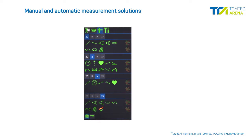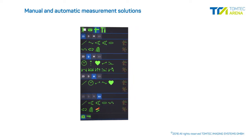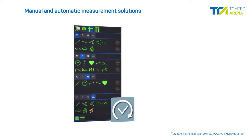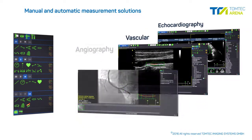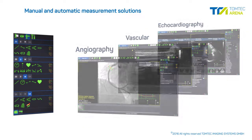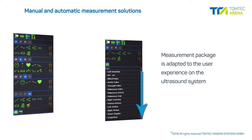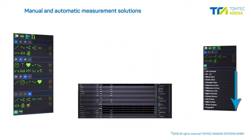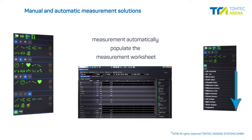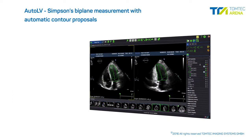The ImageCom measurement module provides manual and automatic measurement solutions for echocardiography, vascular, and angiography examinations. The workflow of the ImageCom measurement package is adapted to the user experience on the ultrasound system. Multiple measurements are supported and measurements performed on the ultrasound system are automatically imported to populate the measurement worksheet.